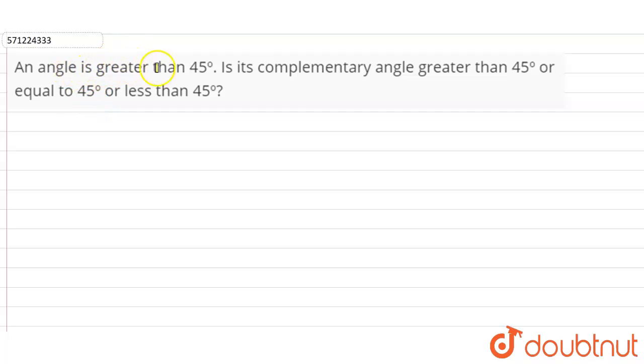It is asking that an angle is greater than 45°. Is its complementary angle greater than 45°, equal to 45°, or less than 45°? So firstly, if two angles are complementary, their sum is 90 degrees.